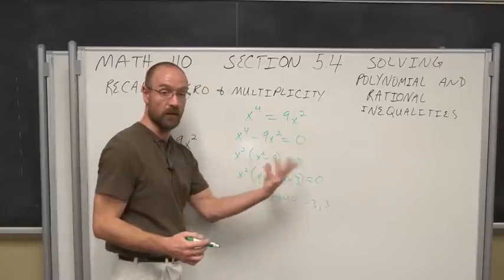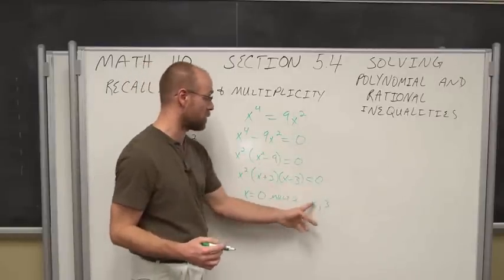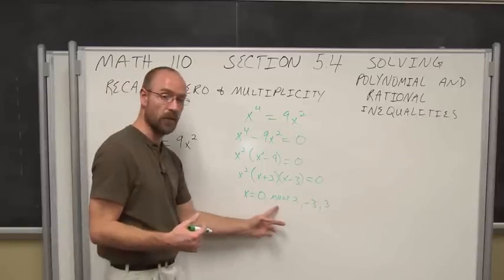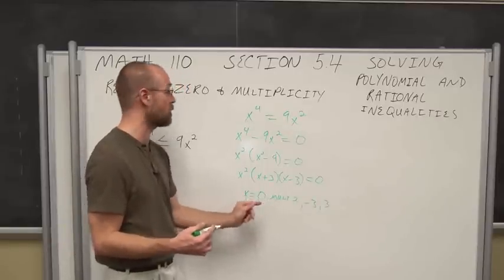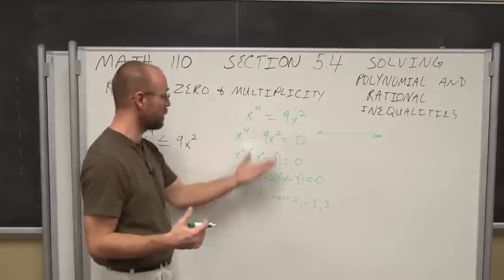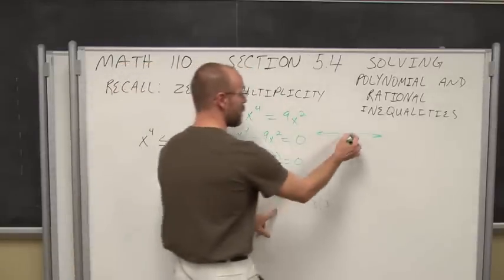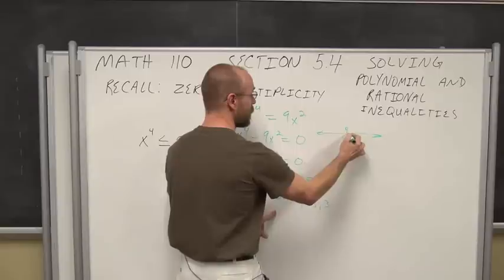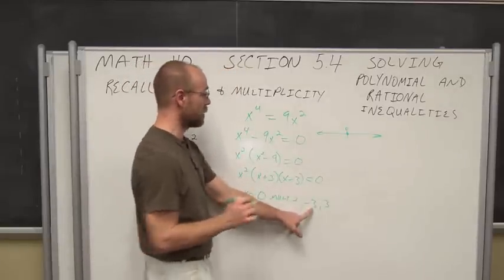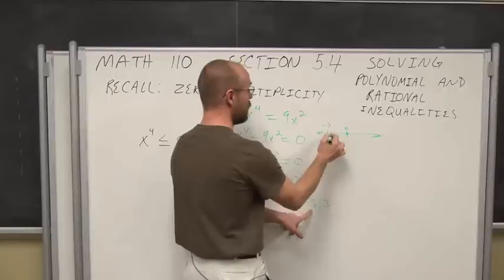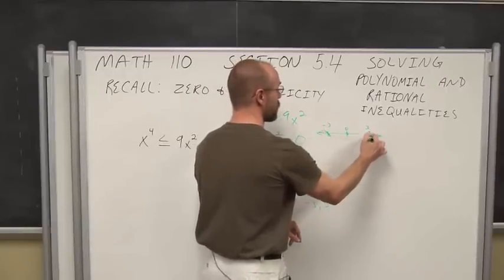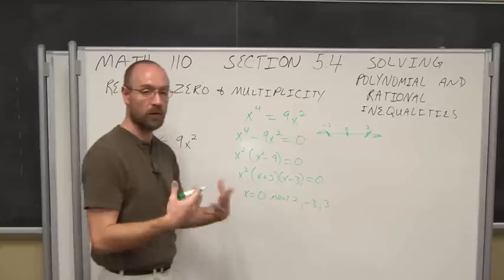I also have zeros of negative 3 and positive 3, and they're just single, so they're odd multiplicity. Which means, if we recall what multiplicity tells us, at this zero with even multiplicity it only touches the axis. So if I were to graph this as a function, at x equals 0 it's just going to touch the axis. At x equals negative 3 it's going to cross through the axis. At x equals positive 3 it's going to pass through the axis.